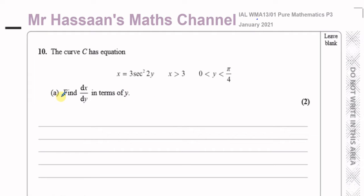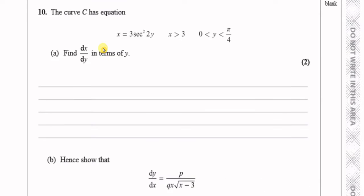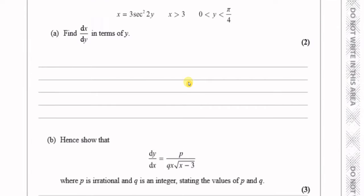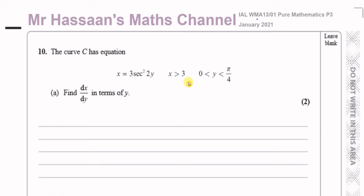So here, part A says find dx/dy in terms of y. Normally it will say find dy/dx, and you ask how do I find dy/dx, how do I make y the subject? What you have to do here is find dx/dy first, and then you can find dy/dx. They're kind of helping you out here — instead of just throwing you in the deep end and saying show that dy/dx equals this, they first gave you a clue of what to do.